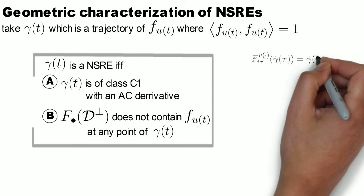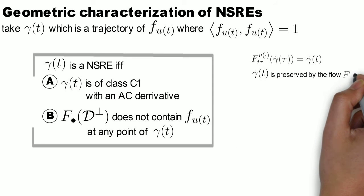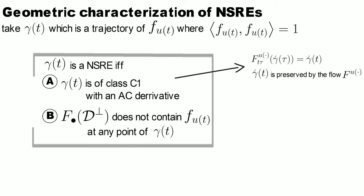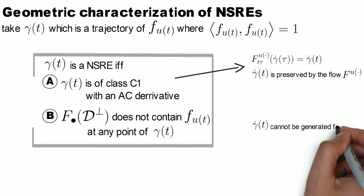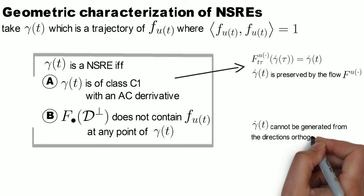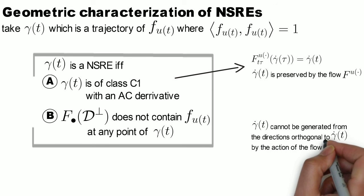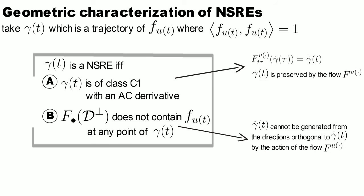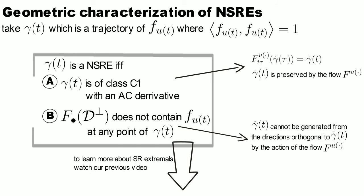The first of these conditions is equivalent to the fact that the flow of the field F of U along gamma preserves the direction tangent to gamma. The second condition means that we cannot generate the direction tangent to gamma by acting by the flow of F of U on the directions perpendicular to gamma. If you want to know more about these conditions and Subriemannian extremals, check our previous video on the topic. The link is in the description below.